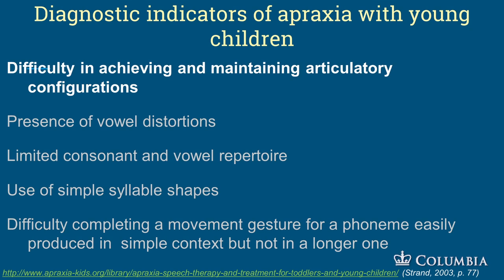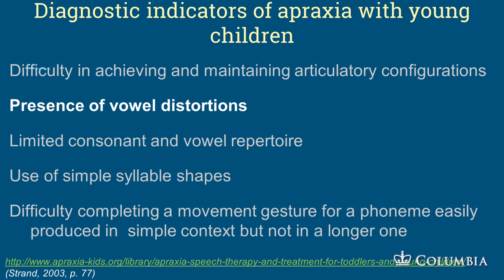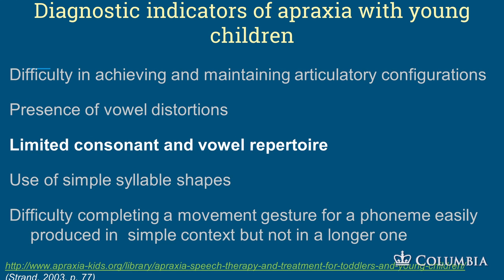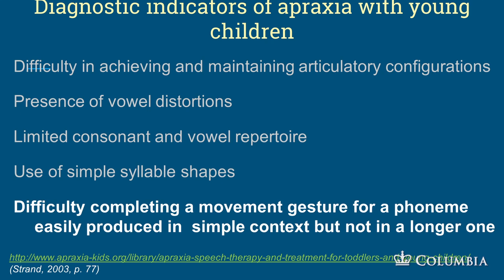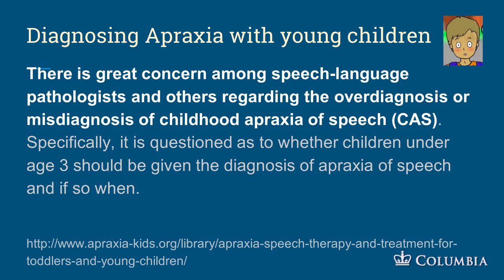What are the diagnostic indicators of apraxia with young children? They have difficulty achieving and maintaining articulatory configurations. There's a presence of vowel distortions, limited consonant and vowel repertoire, use of simple syllable shapes, and difficulty completing a movement gesture for a phoneme easily produced in a simple context but not in a longer context. Most of these features are also consistent with typical development of children.